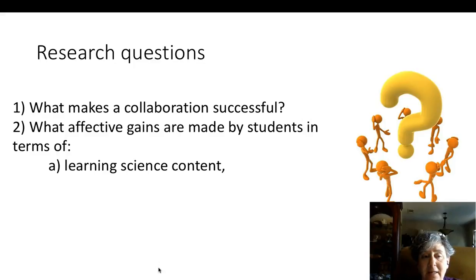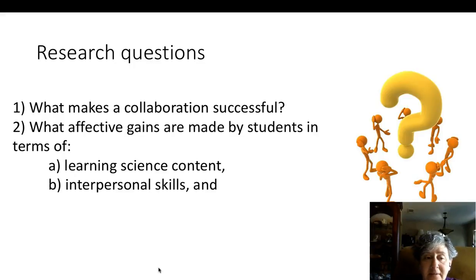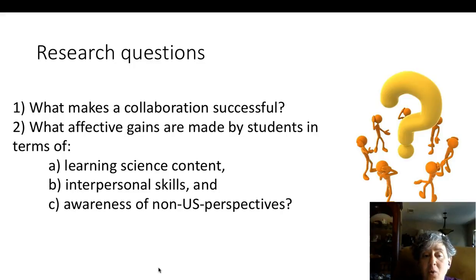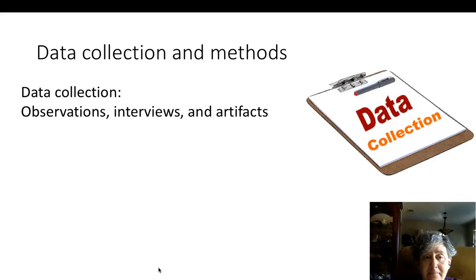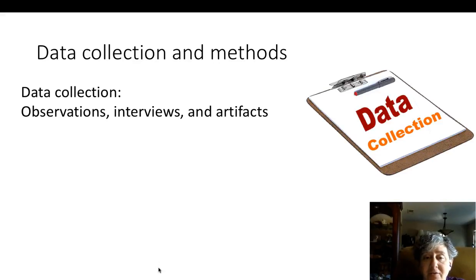And second, what affective gains are made by students in terms of: A, learning science content; B, growth in their interpersonal skills; and C, awareness of non-U.S. perspectives. Data collection will be done in three primary ways to enable triangulation. These are observations, interviews, and collections of artifacts.